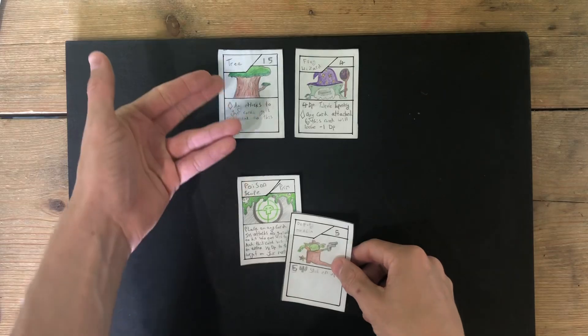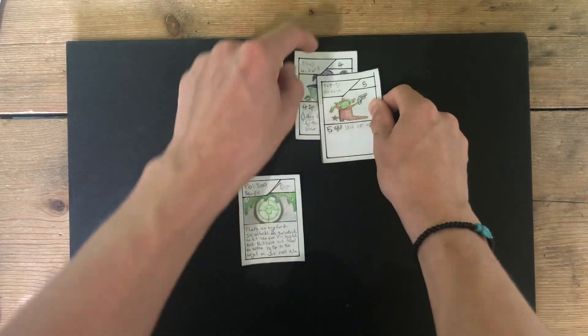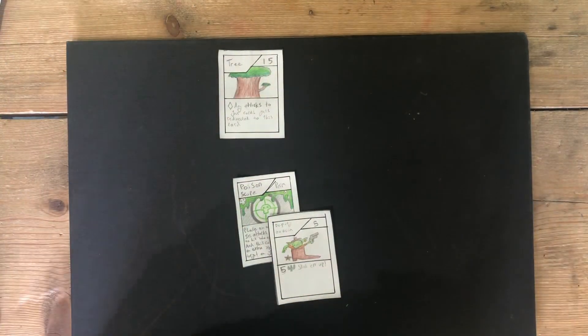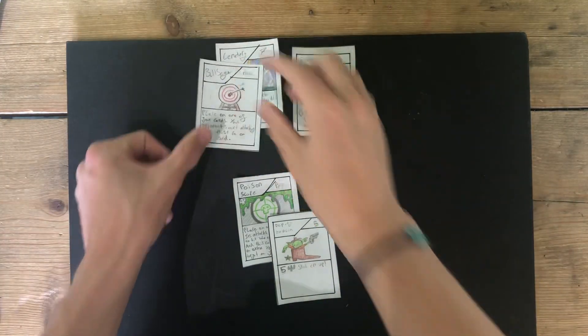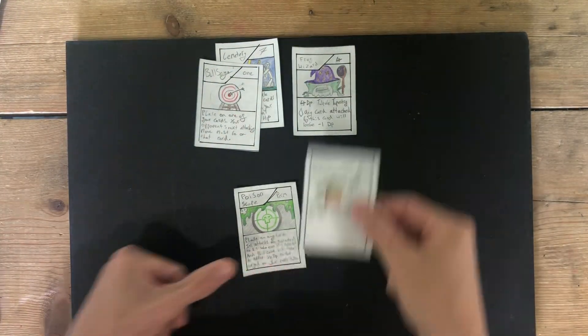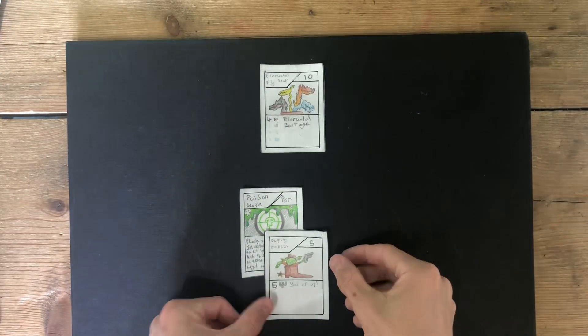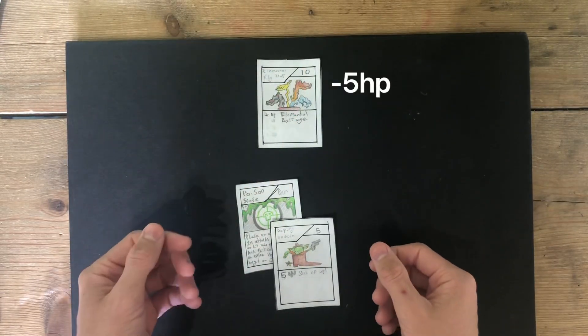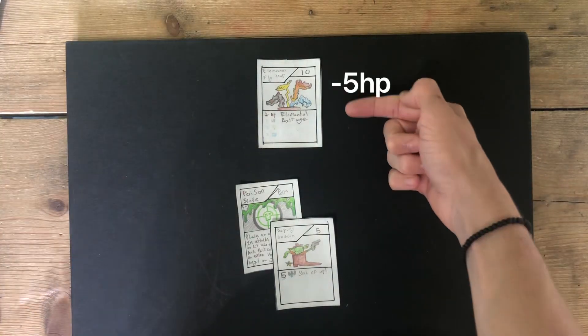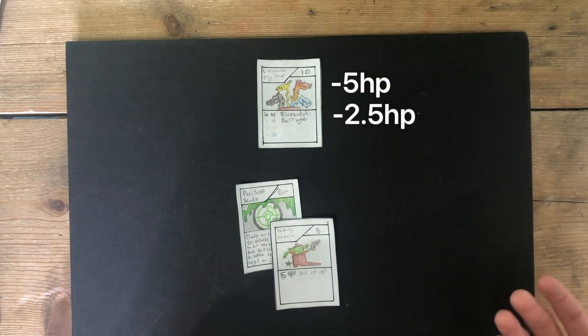The scope also lets me ignore trees, because anything I attack will guarantee to take the damage. Therefore, the Frog Lizard will die, even though they have a tree. The same goes for Bullseyes. If I have a Poison Scope, I'm allowed to ignore their Bullseye and attack whoever I want. The Poison aspect of this: if I was to attack this, I would deal 5 damage, but on my next turn, they would take an additional 2.5 damage, which is half of what I attacked.